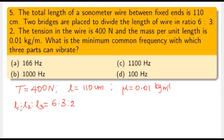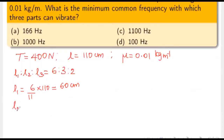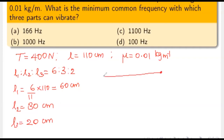The 110 cm length is divided into three parts in ratio 6:3:2. The sum of ratios is 11. So L1 = (6/11) × 110 = 60 cm, L2 = (3/11) × 110 = 30 cm, and L3 = (2/11) × 110 = 20 cm. The wire is thus divided into segments of 60, 30, and 20 centimeters.